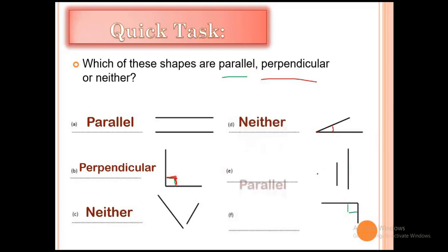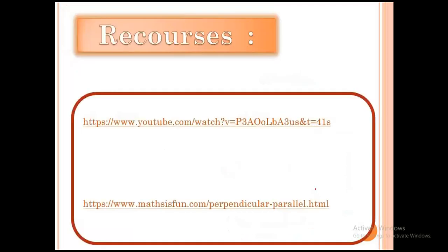Look at question E: two straight lines that never meet — this one is parallel. For question F, two lines meet at one point and make a right angle. When they make a right angle, that means perpendicular.